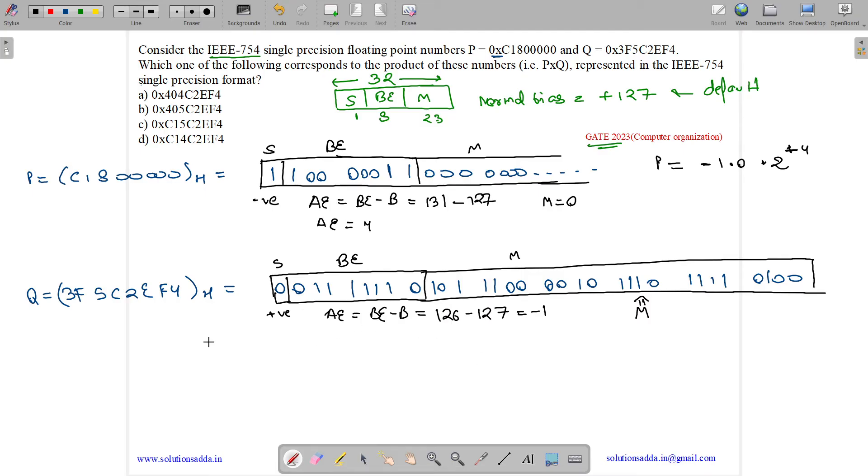What about mantissa? Mantissa is this entire number. Now let's find the value Q. Q = +1.M × 2^(-1), where M is the entire mantissa.